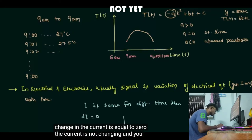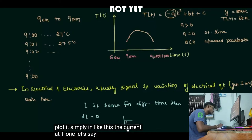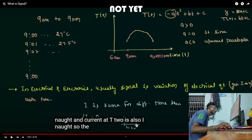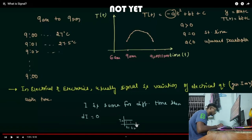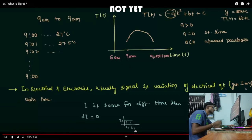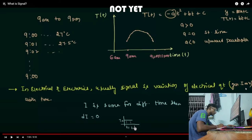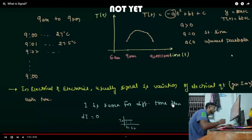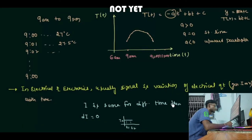You can plot it simply: current at t1 is i₀ and current at t2 is also i₀ — it does not change. A signal must vary with the independent quantity. Now let's talk a little about transducers. Transducers are devices used to convert a non-electrical signal to an electrical signal. A reverse transducer converts an electrical signal back to a non-electrical one.